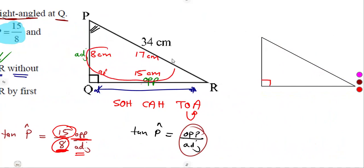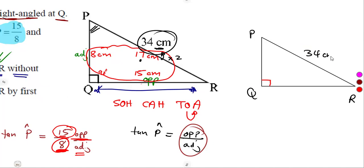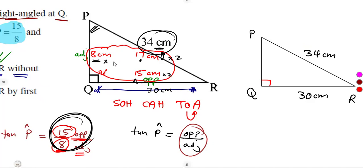From 17 to 34, what happened? 17 times 2 gives us 34. So it means every side of our triangle must be multiplied by 2 to get the exact solution. From this, the exact triangle was originally using these ratio values, but since PR is given as 34 — not 17 — every part was multiplied by 2. So 15 times 2 gives us 30 centimeters for QR, and 8 times 2 gives us 16 centimeters for PQ.